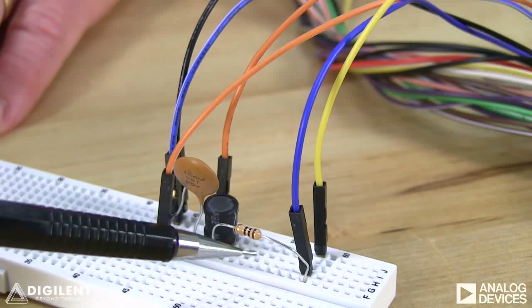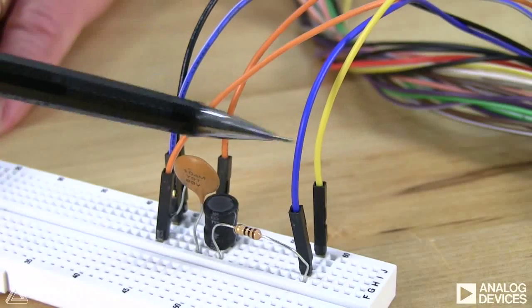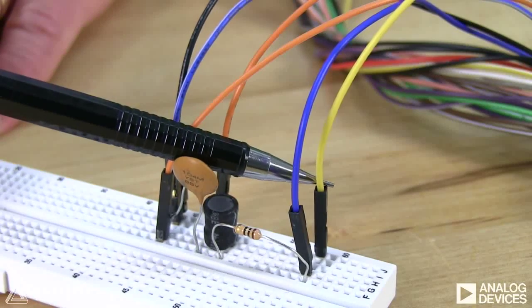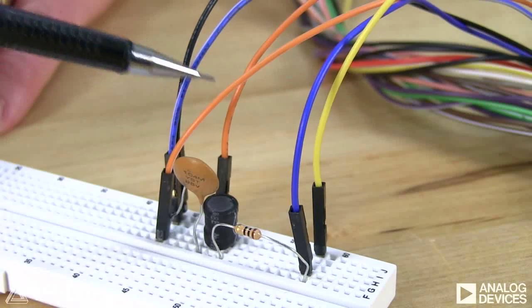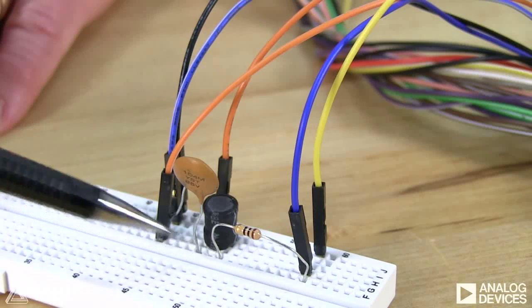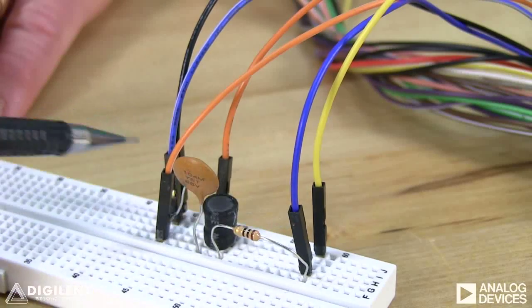Here's our circuit. This is our resistor, our capacitor, and our inductor. We're using channel 1 of the waveform generator to apply power. Our ground is down here. Channel 1 of the oscilloscope is measuring the voltage across the capacitor. Channel 2 of the oscilloscope is measuring the input voltage.